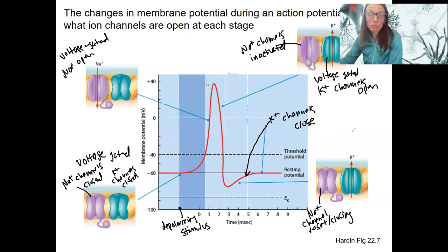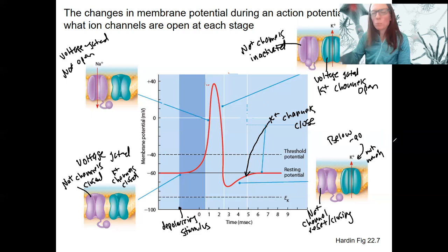Potassium is not flowing out very much anymore, like below minus 90, because we're in electrical equilibrium for potassium, not much. That's how we stop hyperpolarizing more than minus 90.